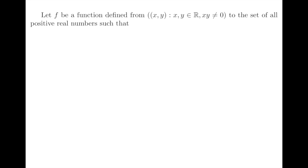We are given a function f defined on the following set, which has two coordinates x and y such that x times y is different from 0. And the image of f is defined on the positive real numbers. And furthermore, we assume that f satisfies the following conditions.